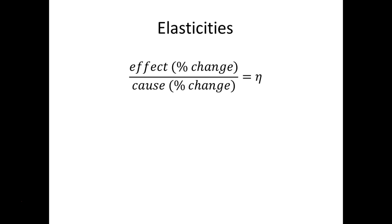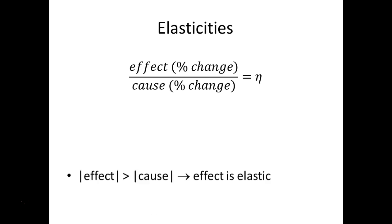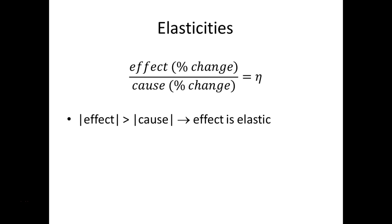We put the effect measured as a percentage change over the cause measured as a percentage change, and we can represent that by a single number — eta, that Greek letter. So for example if the effect were 1% and the cause were 2%, then that's 1 over 2, or as a decimal 0.5. You can use this for all sorts of things; it doesn't have to be for economics. For example, we could ask: if I added 10% more fertilizer to my field, how much did my crop yields go up by in percentage terms?